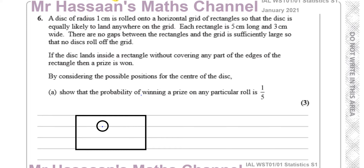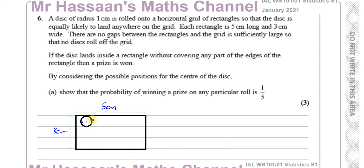We have the rectangle: the length is 5 and the width is 3. If you think about where this circle can land — this is the limit to where it can land. If it goes any further upwards, it's going to cover the line. So it can't get any closer than this point here to the edge. There'll be a line going along here which will be the same distance away. That's going to be 0.5 centimeters this way and that way, and also this way and that way, and also in each corner.